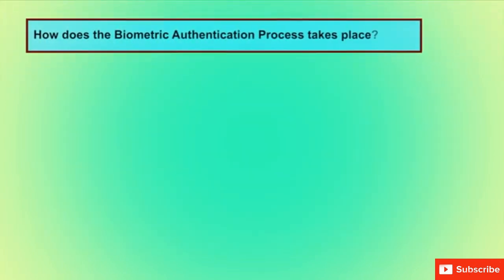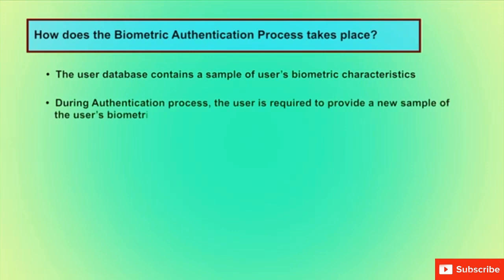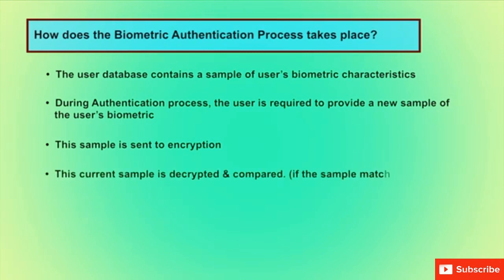In the biometric authentication process, the user database contains a sample of the user's biometric characteristics in the initial phase. During authentication, the user provides a new sample at runtime. This current sample is encrypted, then decrypted and compared against the stored sample. If the sample matches, the user is considered valid (authentic); otherwise, the user is unauthentic.